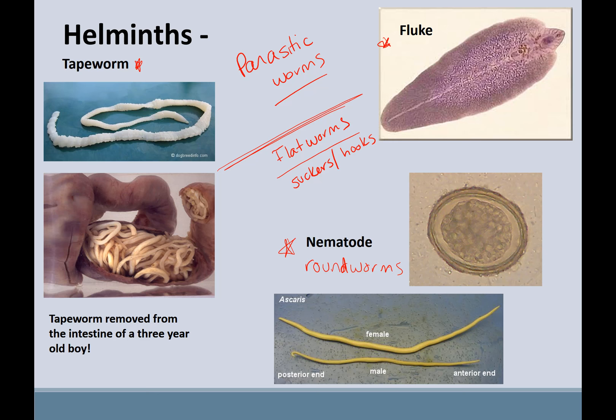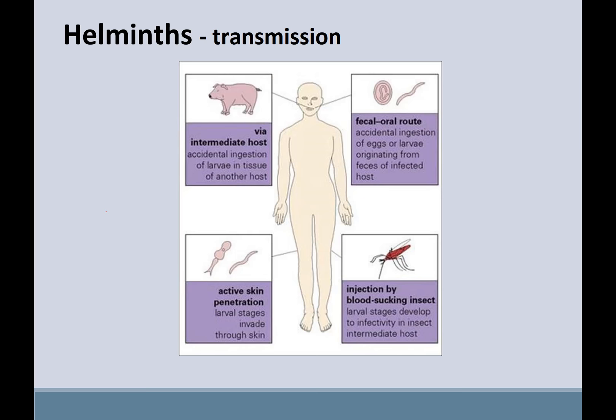Flatworms have a flattened body and suckers or hooks that allow them to attach to their host. Just like protozoa, helminths can come in different stages of their life cycle — there are cysts, which form that protective coat, larval stages, and eggs. Tapeworms can grow many, many feet in length.